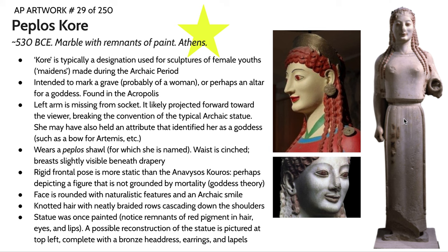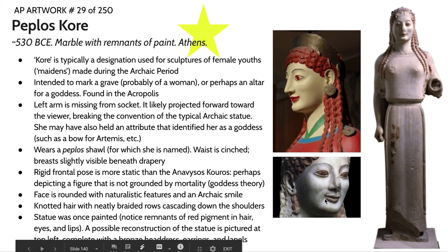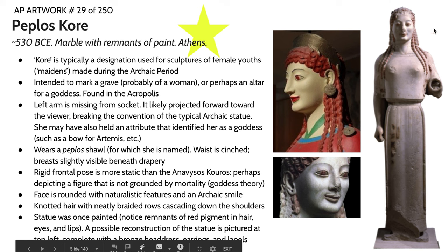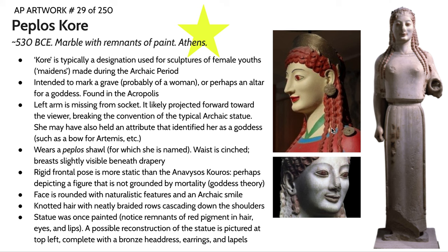She's clothed and in a less active stance than we're seeing in the Anavisos Kouros, and this is really illustrating the societal roles of men and women in ancient Greece. Her face has these naturalistic, more rounded features and this kind of curled smirk that gives her a humanness. You are seeing remnants of paint in the sculpture, most notably the red. There is also a reconstruction of what the statue may have looked like when originally displayed, and you can see that there are metal ornaments that have since been lost — there are holes in the statue where these metal ornaments might have originally rested.